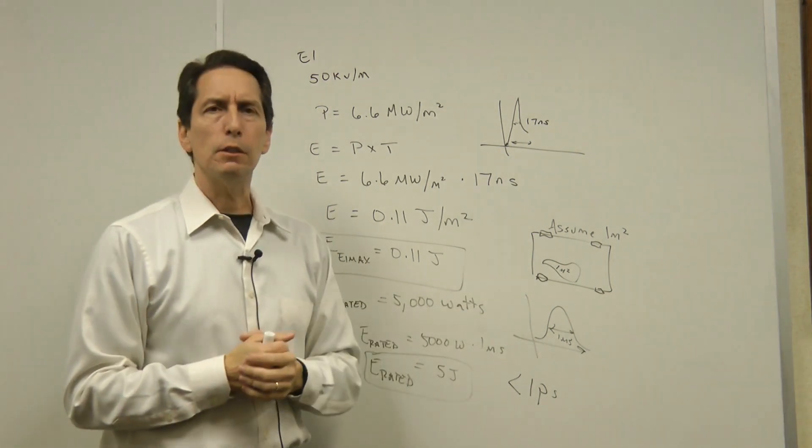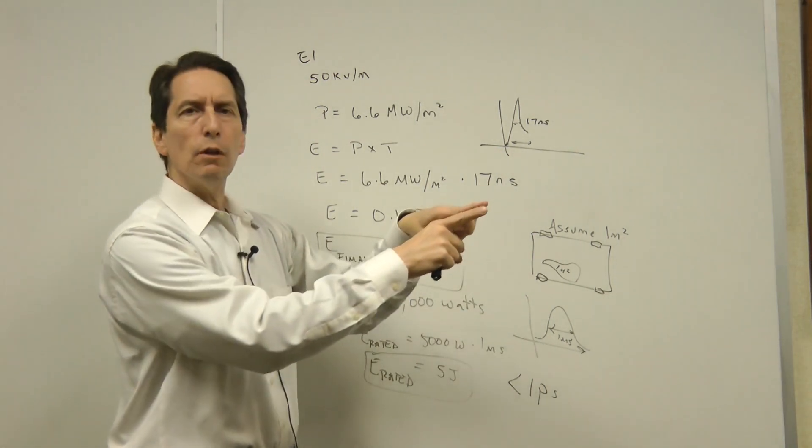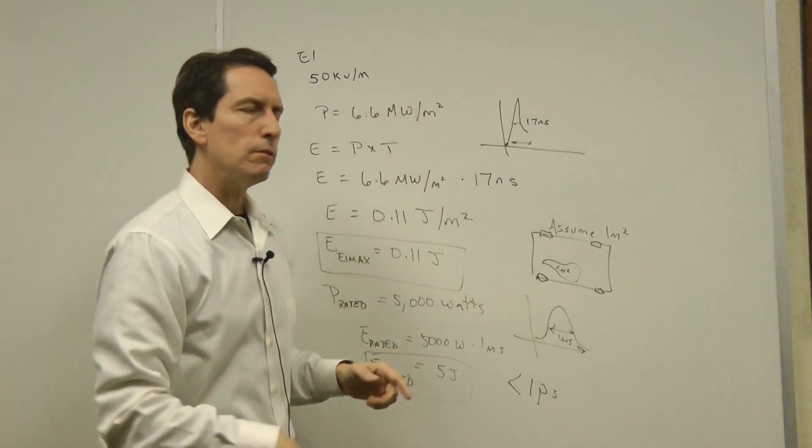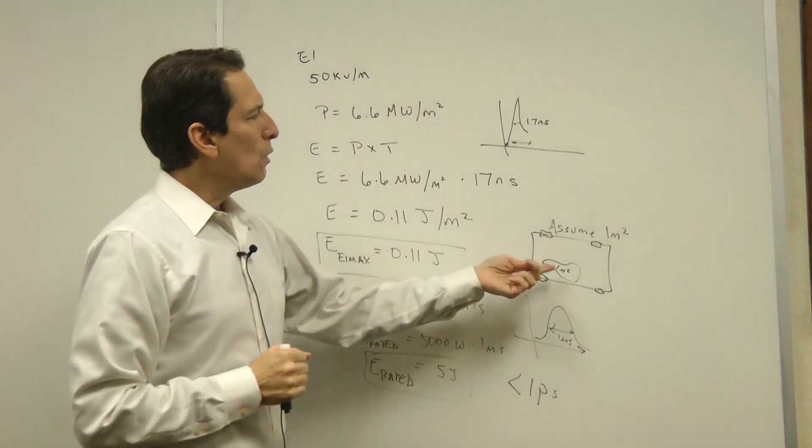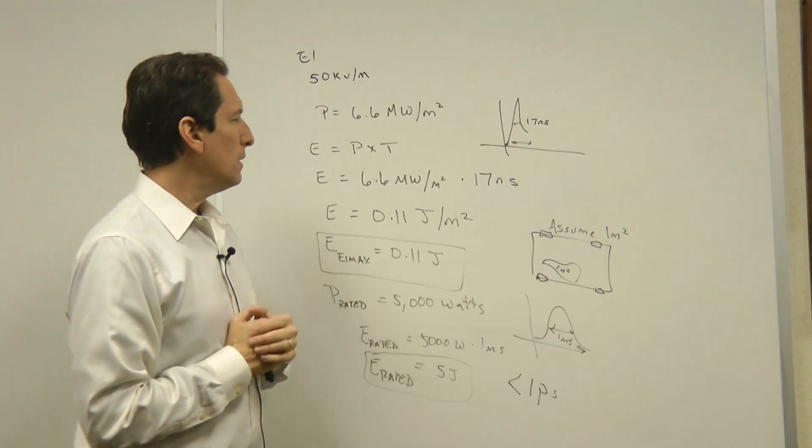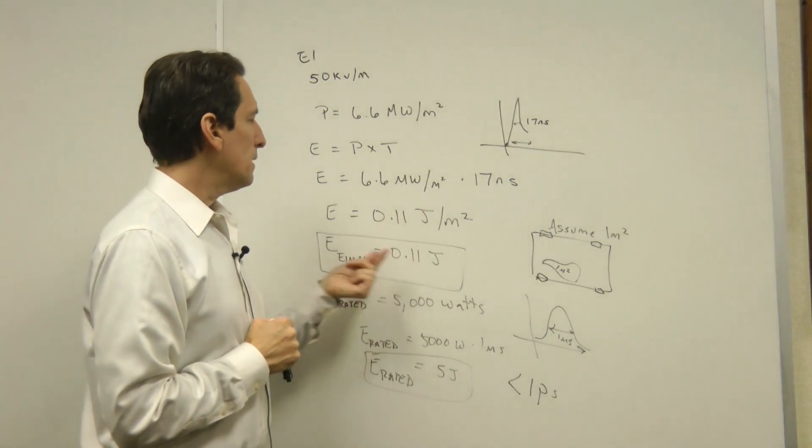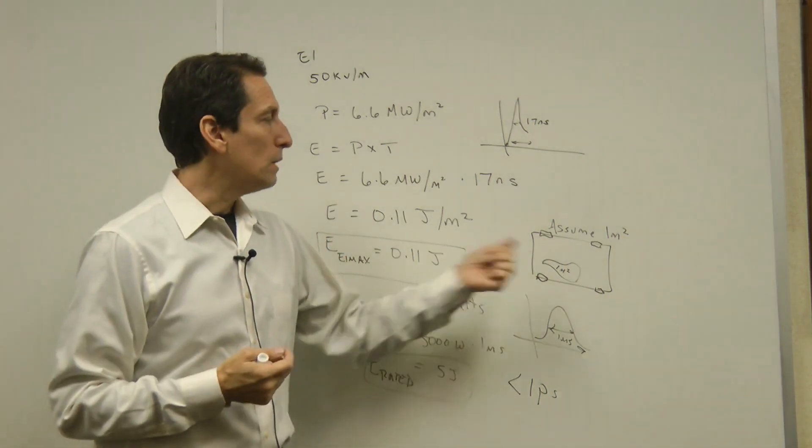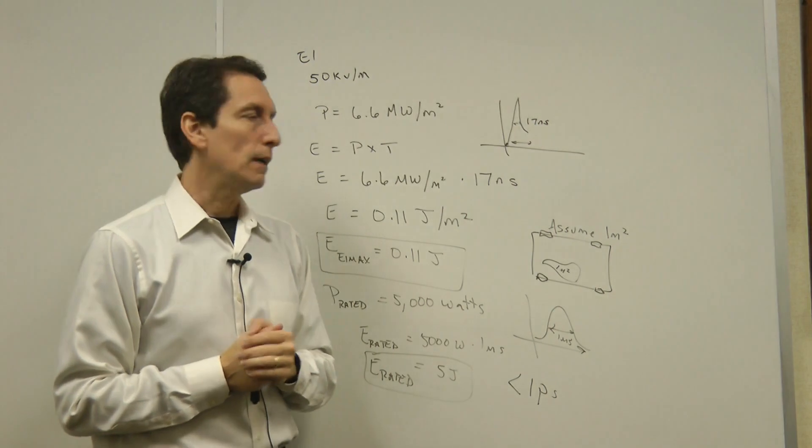Now some will be much smaller than that because the wires and the returns run right together, but we're just assuming sort of a wide loop, a current that travels in a wide loop. So one square meter, if we put one square meter here and we multiply it together, we get that the maximum energy that you'd expect to see from an E1 in that one square meter loop is about 0.11 joules.